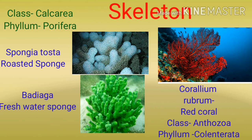Animal skeleton से बनने वाली medicines में हमने तीन examples लिए हैं। दो examples class Calcarea और phylum Porifera से हैं। पहला है Spongia tosta जिसका common name है roasted sponge। Second one है Badiaga जिसे commonly कहते हैं fresh water sponge। Third one is Corallium rubrum — rubrum से obviously यह red है — जिसे commonly कहते हैं red coral, class Anthozoa, phylum Coelenterata।